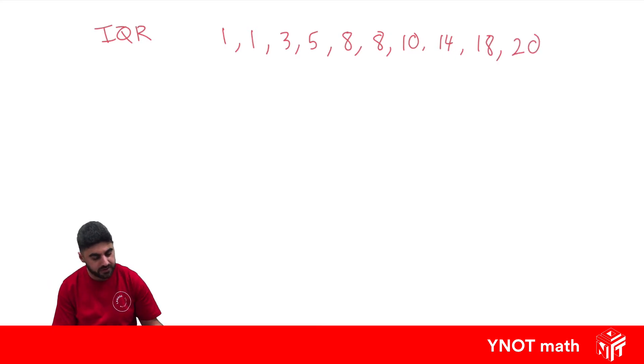So the first step is to find the middle. So we've got 1, 2, 3, 4, 5, 6, 7, 8, 9, 10 scores, which means there's going to be five on each side, so we can split it there, and that's going to be the middle.